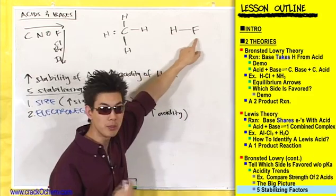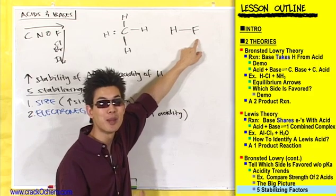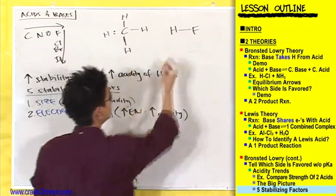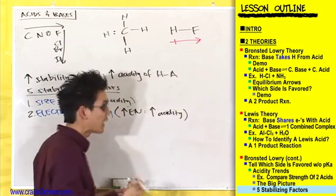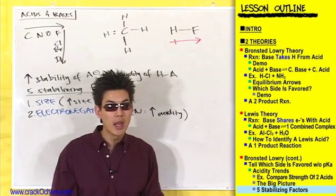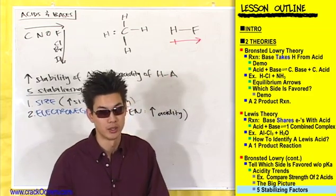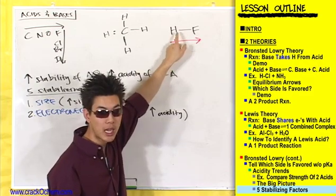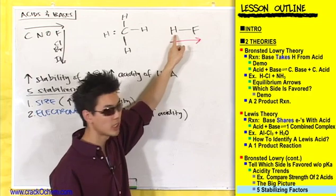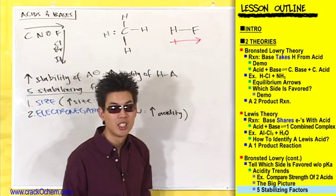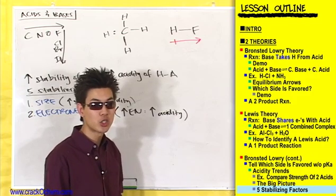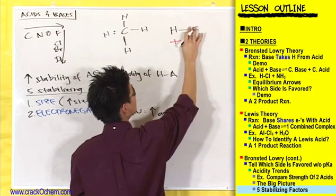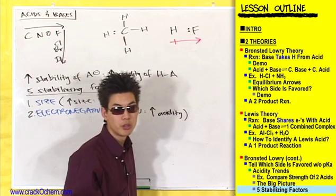Now look at fluorine connected to a hydrogen. Is fluorine more electronegative than hydrogen? Yes — it's the most electronegative atom on the periodic table. So fluorine is pulling electrons away from hydrogen, which you can designate with a dipole arrow — a polar bond. When you look at this bond between the hydrogen and the fluorine, these electrons are going to be closer to the fluorine. You could draw these electrons closer to the fluorine.